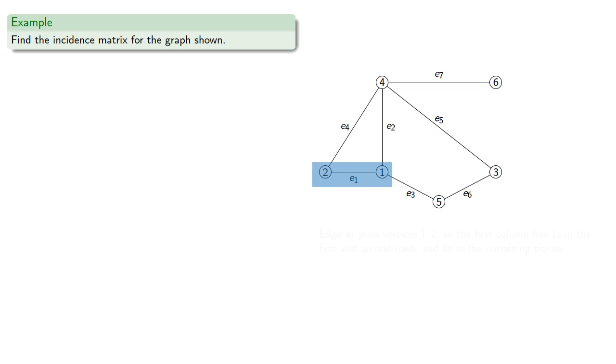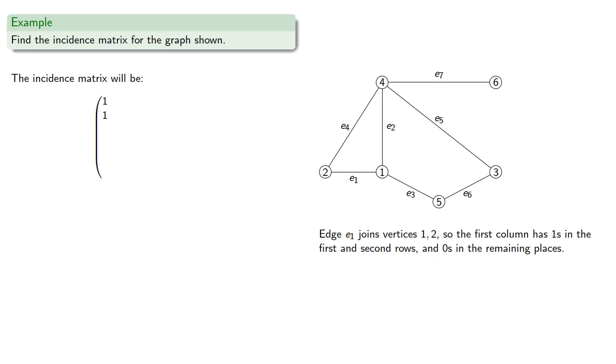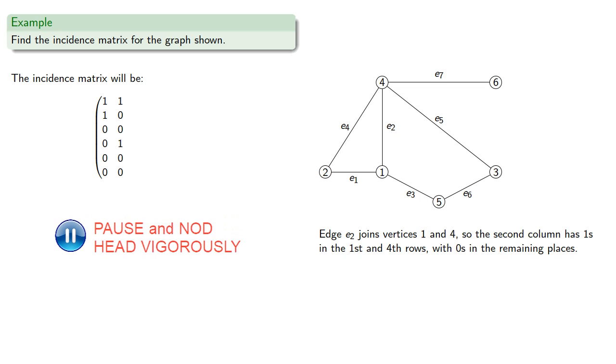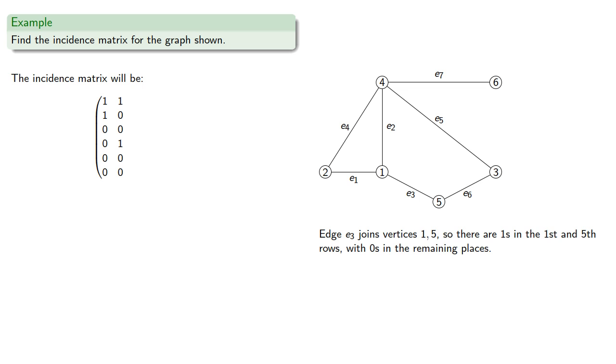So we'll build up our matrix column by column. Edge E1 joins vertices 1 and 2, so the first column has 1s in the first and second rows, and 0s in the remaining places. Edge E2 joins vertices 1 and 4, so the second column has 1s in the first and fourth rows, with 0s in the remaining places. Edge E3 joins vertices 1 and 5, so there are 1s in the first and fifth rows, with 0s in the remaining places.